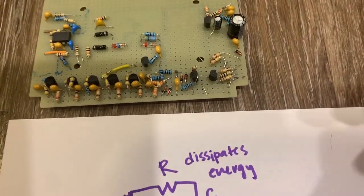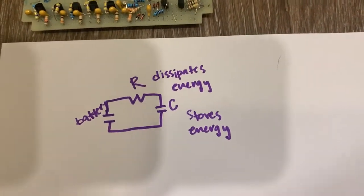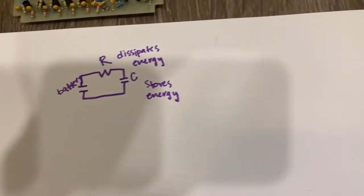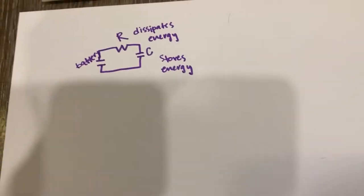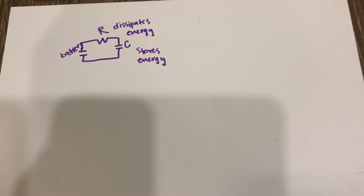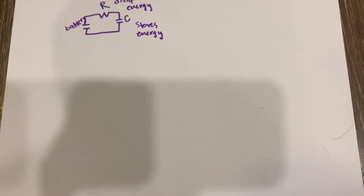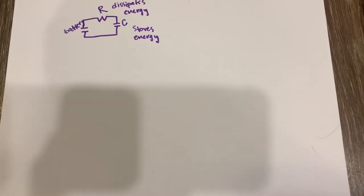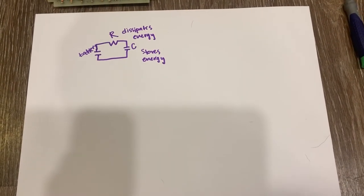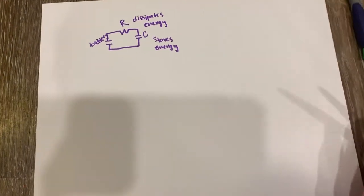So those are just some examples of RC circuits in real life. And let's continue to talk about these. It's important for us to learn how capacitors are charged and discharged within RC circuits. So there are some equations that we need to know for this.